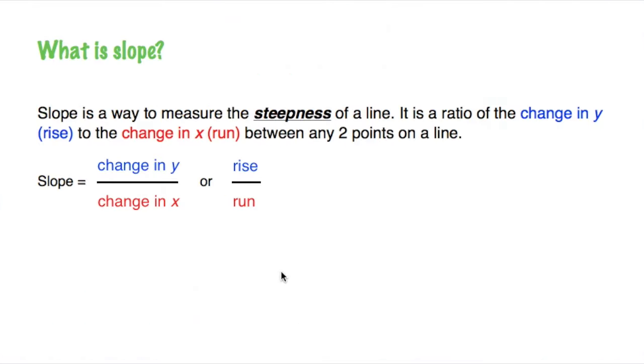So before we do an example, what exactly is slope? Well, slope is just a way to measure the steepness of a line. And if you have ever skied or snowboarded, you would know ski slopes, and different ones have different steepnesses. Some are really steep and very difficult, and some are a lot flatter and a lot easier. So that's what slope is, it's just how steep a line is.